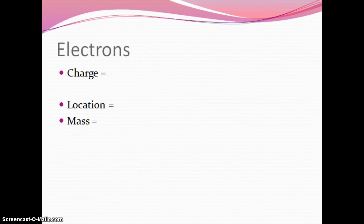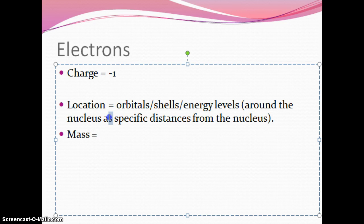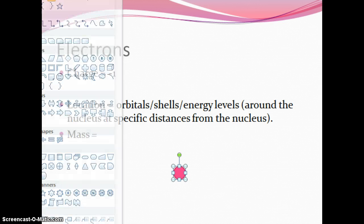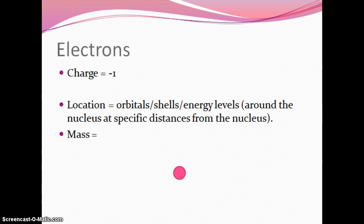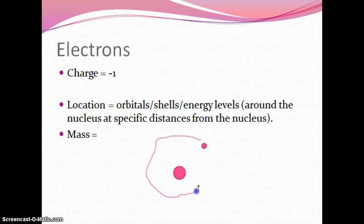Let's look at electrons. The charge of electrons is negative one. Where are electrons located? In orbitals, shells, or energy levels — they all mean exactly the same thing — around the nucleus at specific distances from the nucleus. When we draw it, we often use the Bohr diagram: the nucleus in the center, with electrons buzzing around it in a circular path.